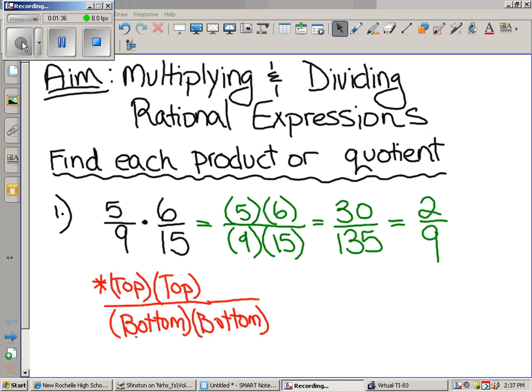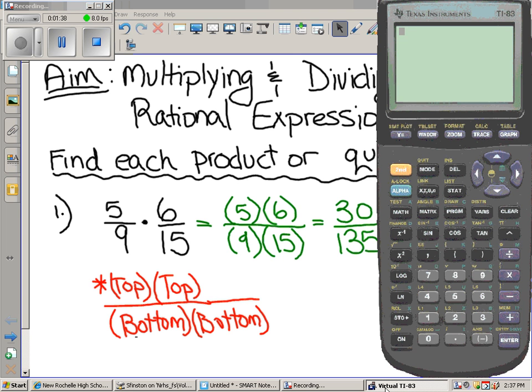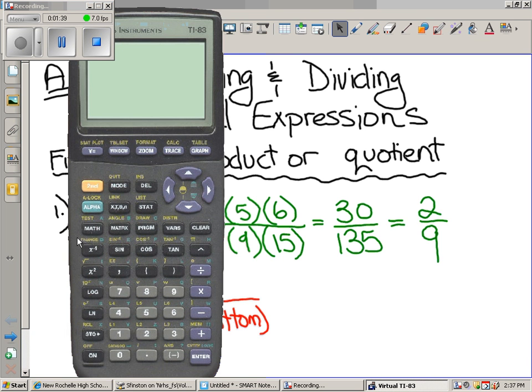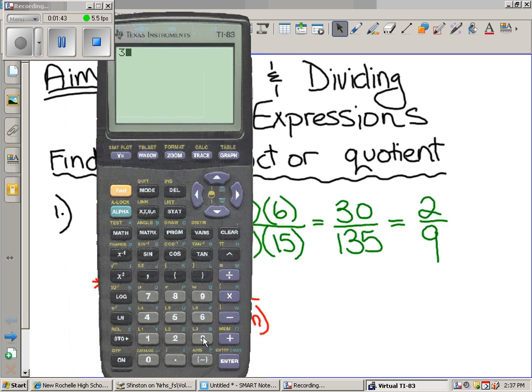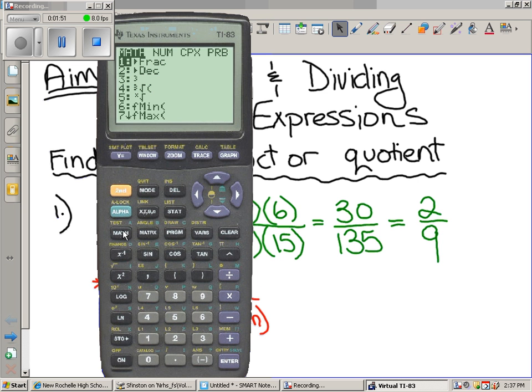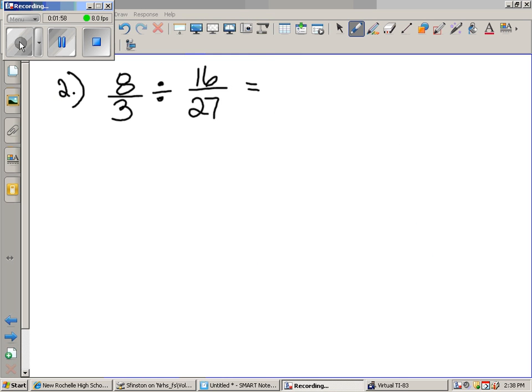How do we get two ninths? Great question. Check this out. Now, you could just plug that into your calculator, right? Thirty divided by 135. Math.